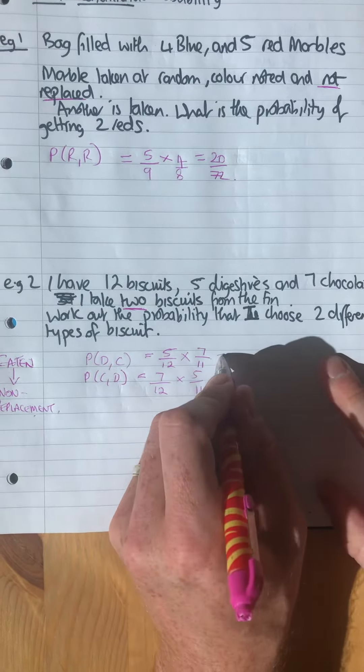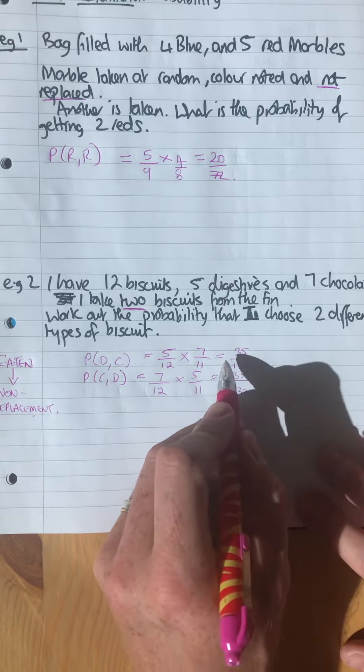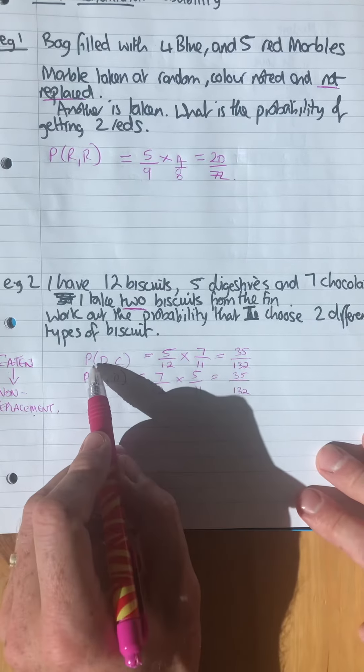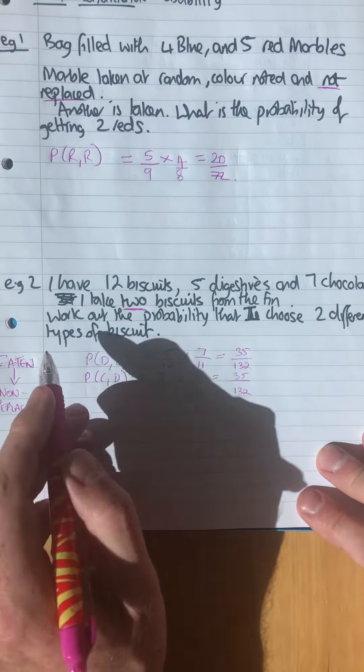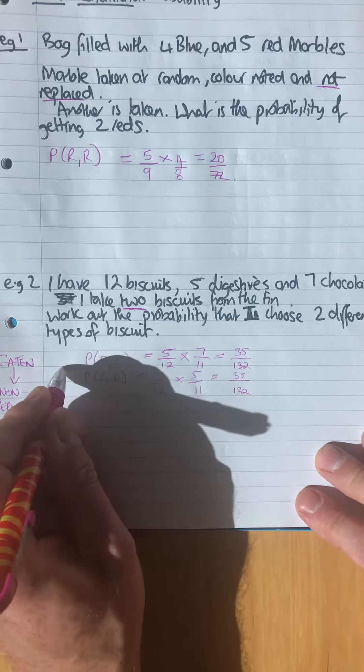What do you do to those two? Well, you want either digestive and chocolate or chocolate and digestive, so you would add those together. Same denominator stays the same, at the top 70 out of 132.